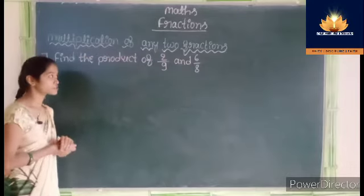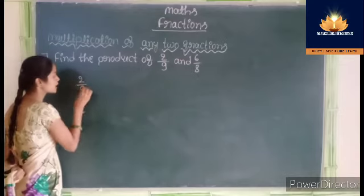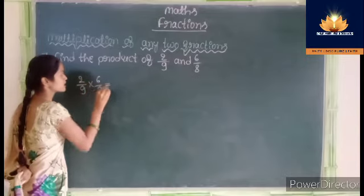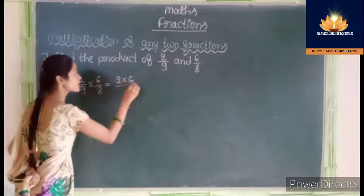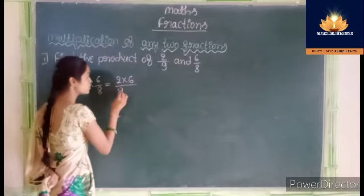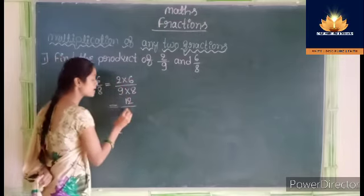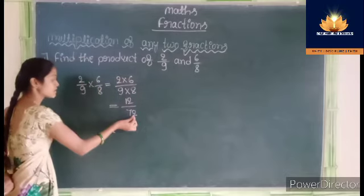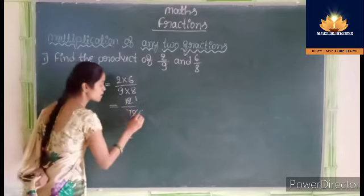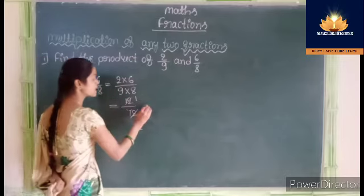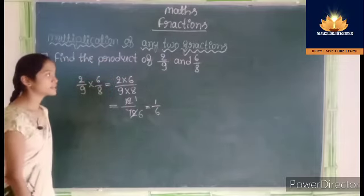Multiplication of any 2 fractions. Find the product of 2 upon 9 and 6 upon 8. So 2 by 9 into 6 by 8: first find the product of numerators, 2 into 6 equals 12. Then denominators, 9 into 8 equals 72. 72 is exactly divisible by 12, giving 6. We get 1 upon 6 as a product when we multiply 2 by 9 and 6 by 8.